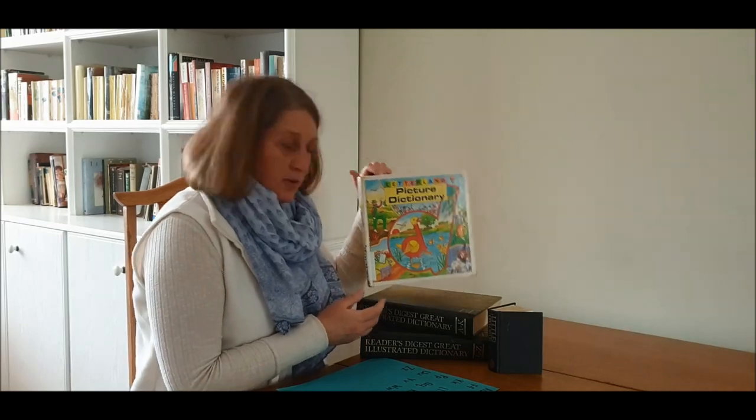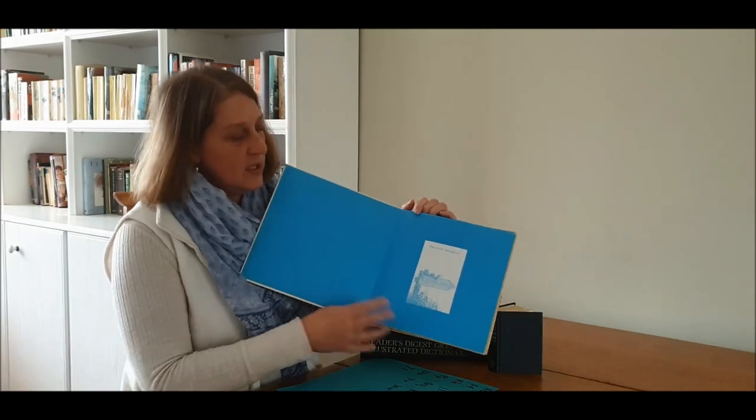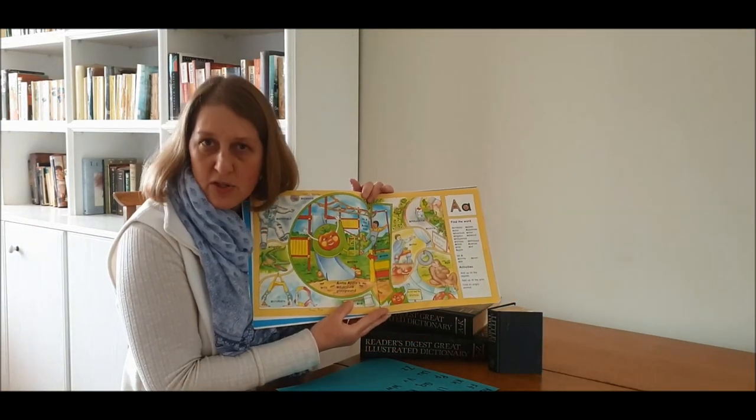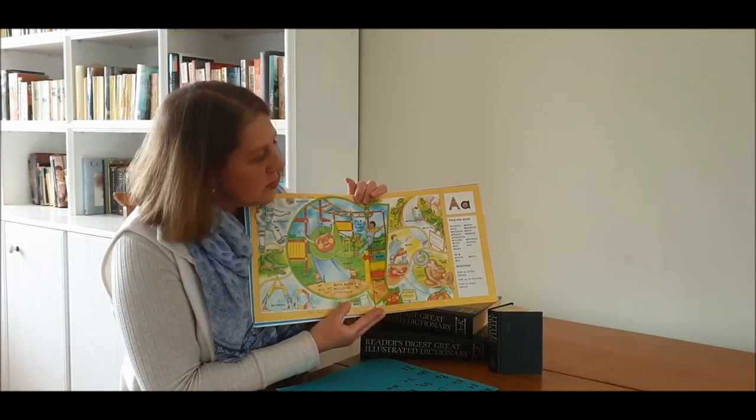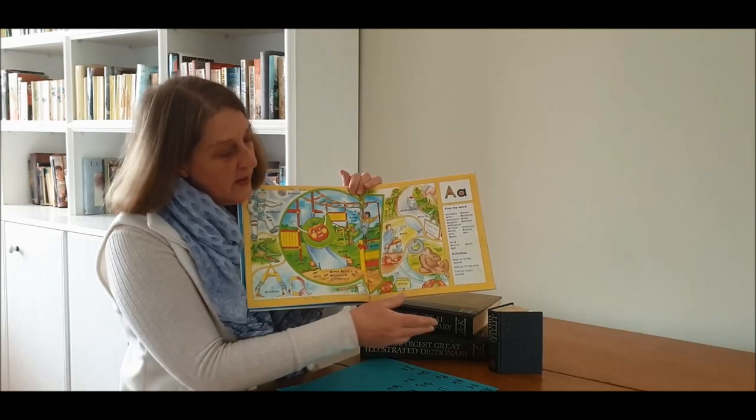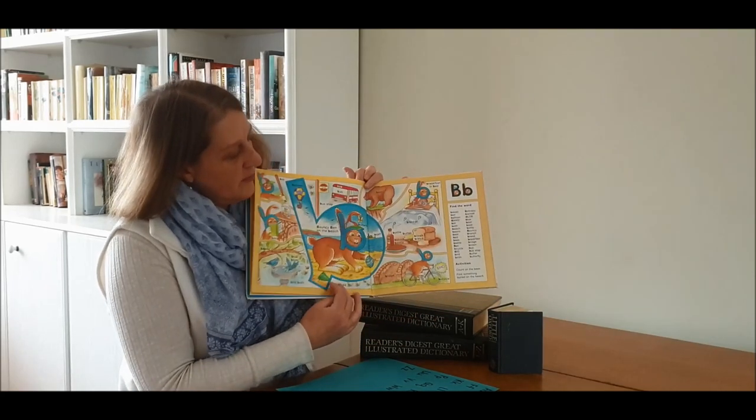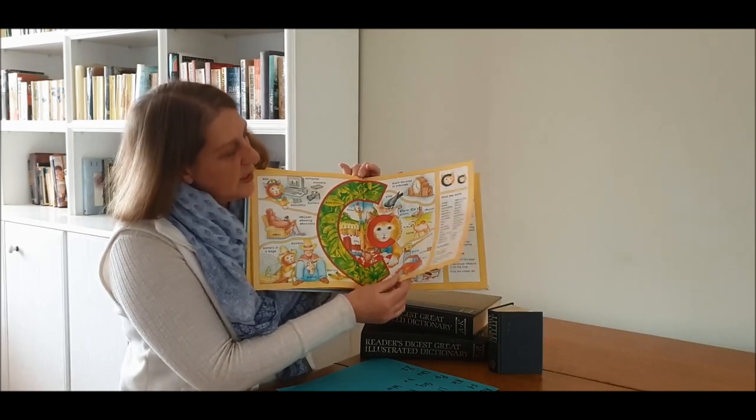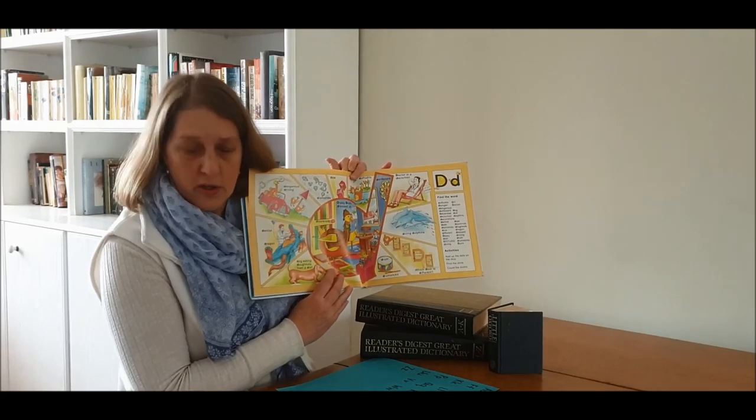In our Letterland Picture Dictionary you'll see that the alphabet begins with A and so the first page of our Picture Dictionary has got all sorts of things that start with A and it carries on in order. Then we have a B page and a curly K and a D and so on.